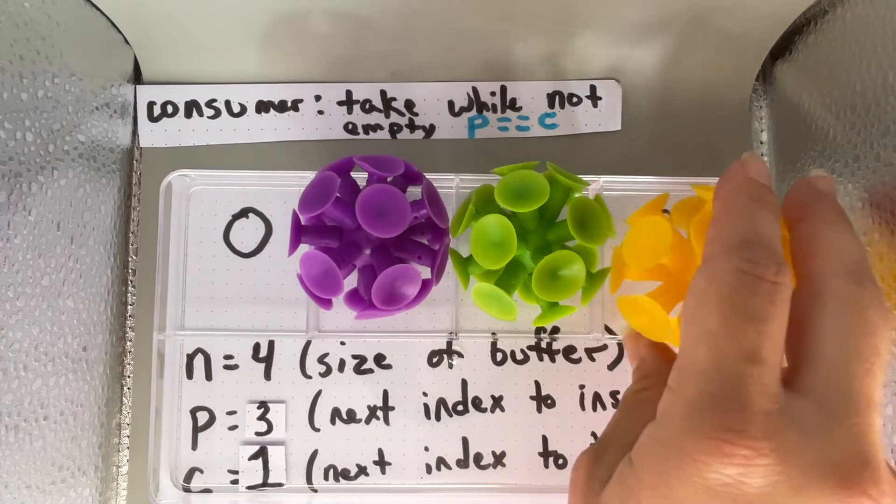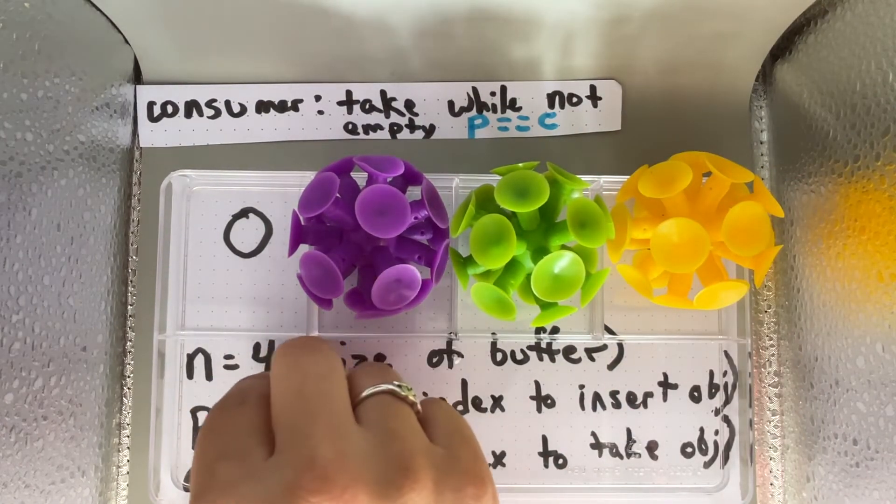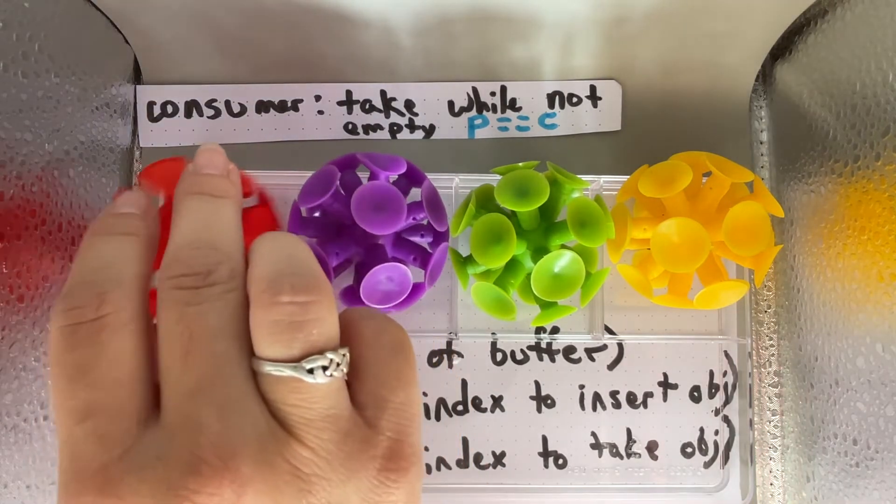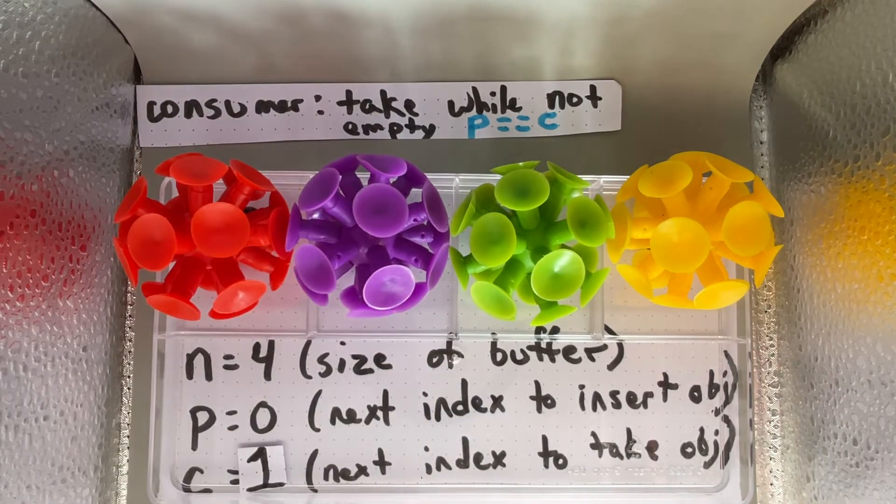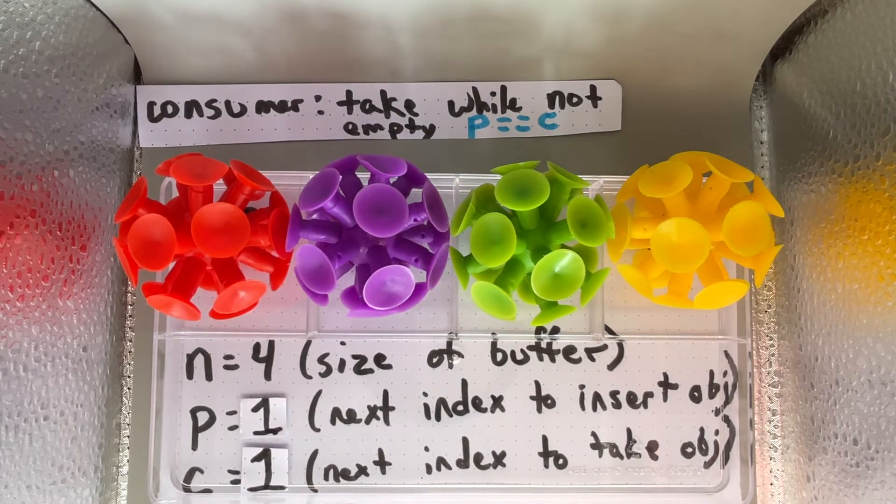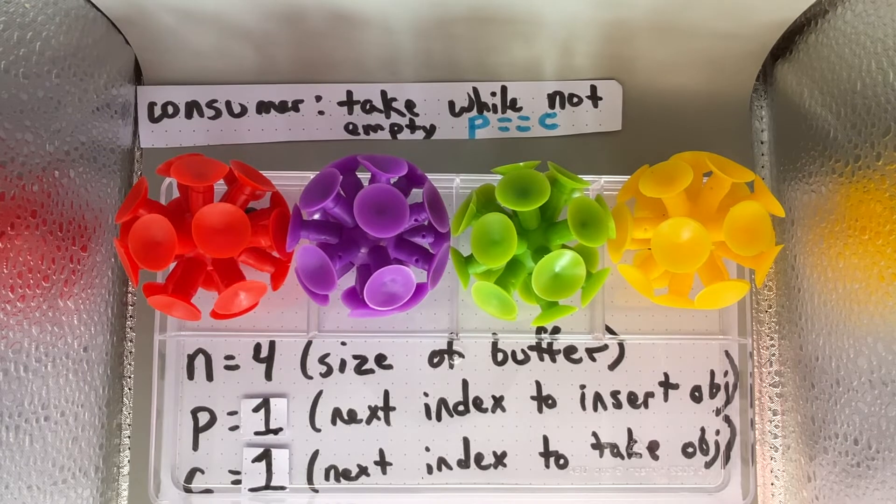When the producer puts something in index 3, they are at index 0, and when the producer puts something into index 0, they are back to being at index 1. The producer can no longer put anything into this buffer because it is full.